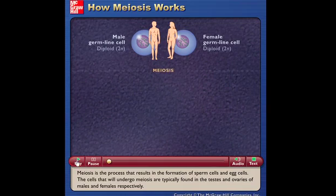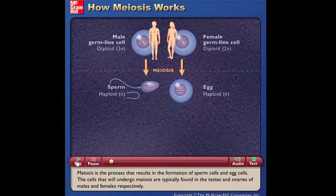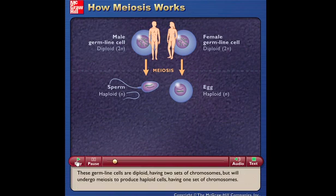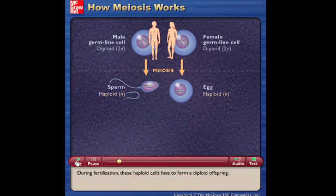Meiosis is the process that results in the formation of sperm cells and egg cells. The cells that will undergo meiosis are typically found in the testes and ovaries of males and females, respectively. These germline cells are diploid, having two sets of chromosomes, but will undergo meiosis to produce haploid cells, having one set of chromosomes. During fertilization, these haploid cells fuse to form a diploid offspring.